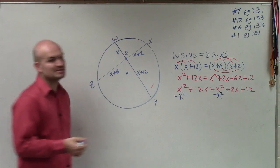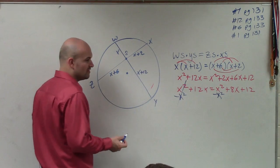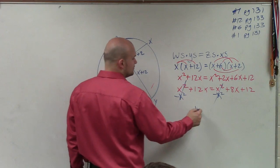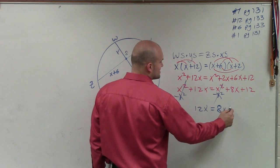And what's nice about this problem is I don't have to factor, because x squared minus x squared gives me 0x squared, which means it's not going to be around. And that goes out as well. So I'm left with 12x equals 8x plus 12.